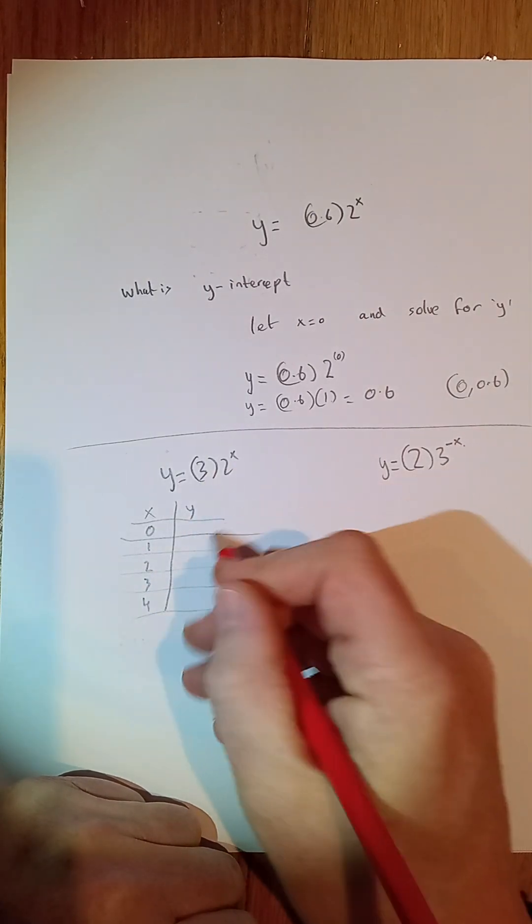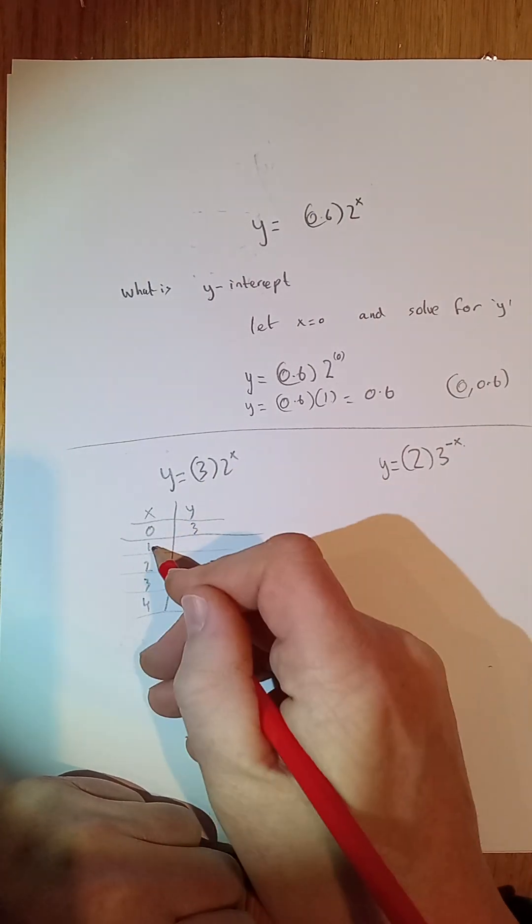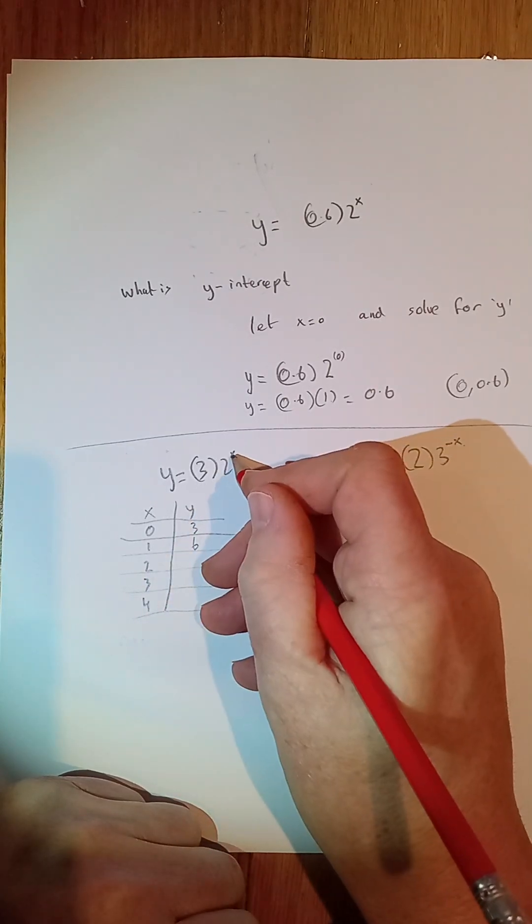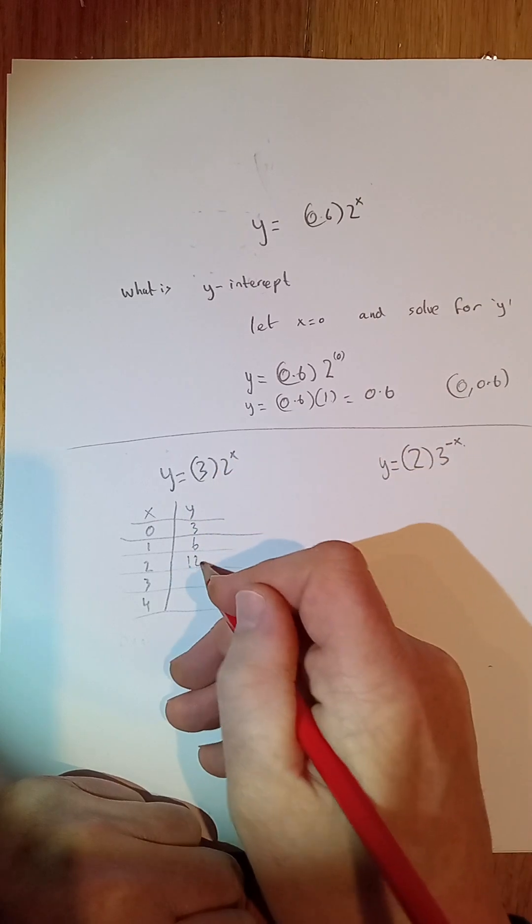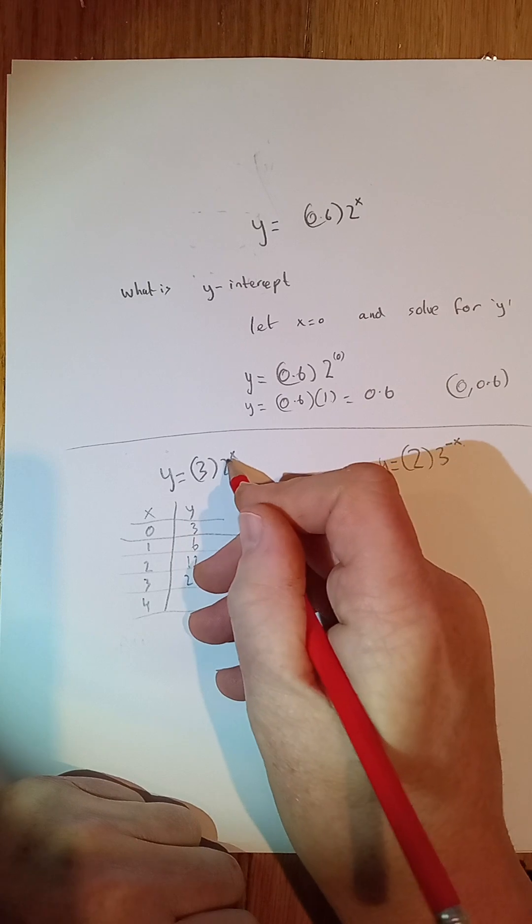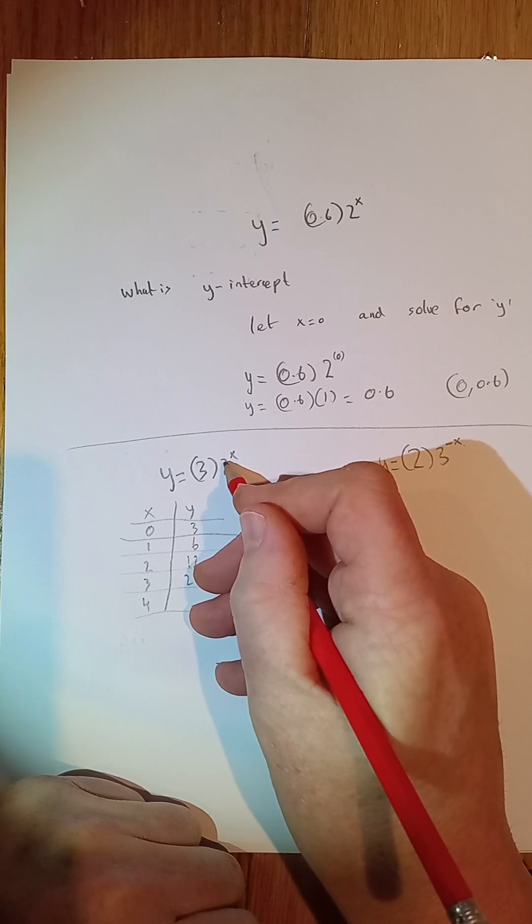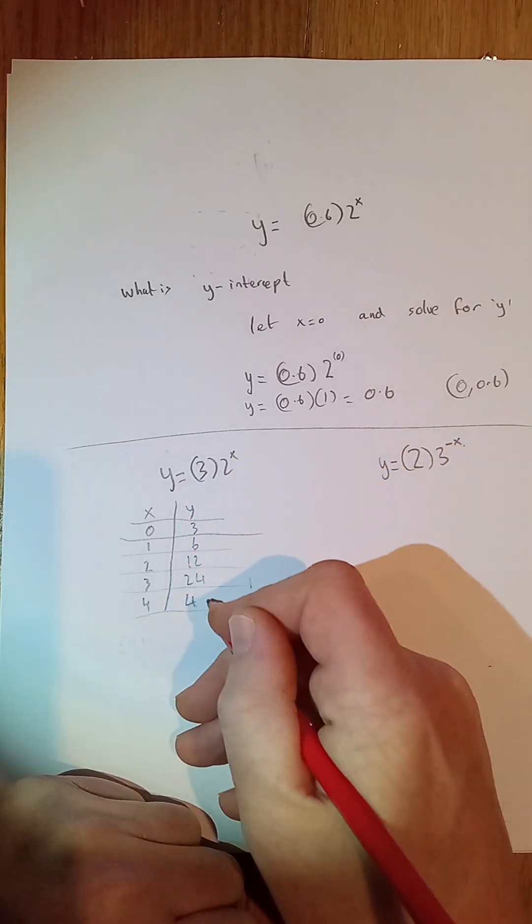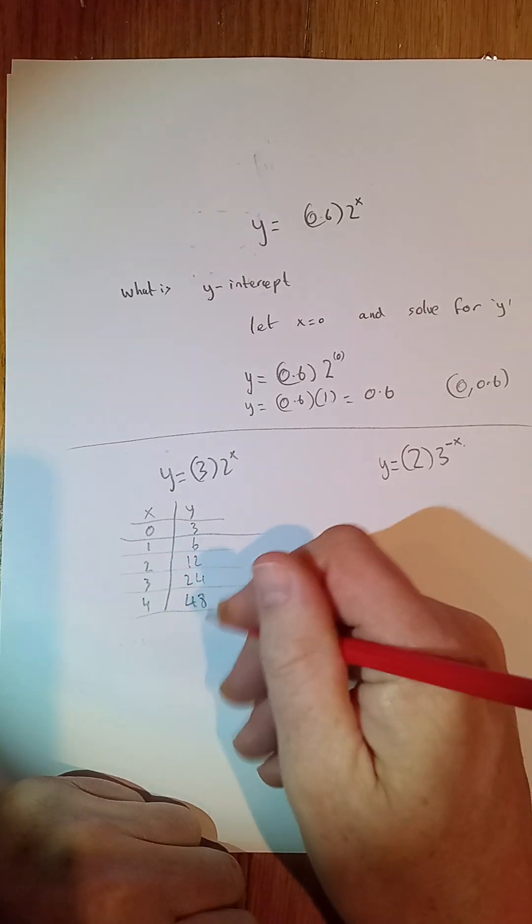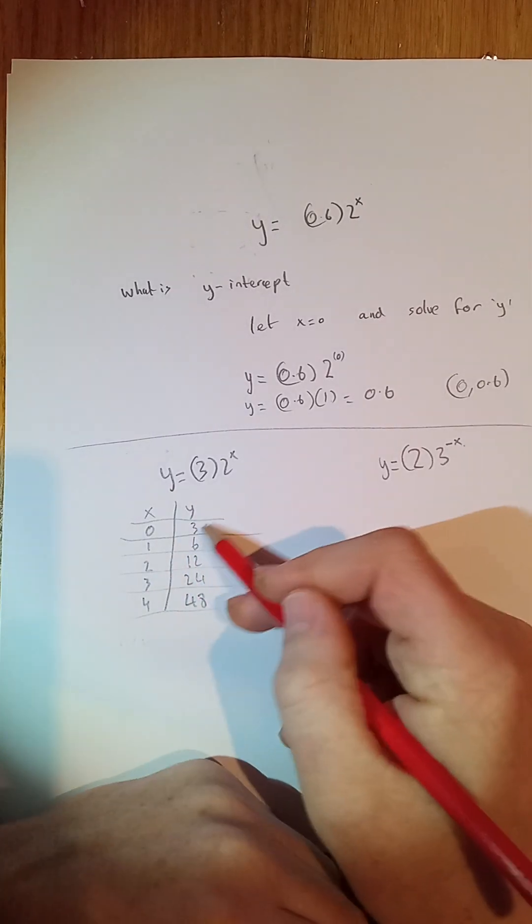We're going to start at x equals 0, and then do x equals 1, 2, 3, and 4. When x is 0, y is 3. When x is 1, y is 6. When x is 2, that's 2 squared is 4, y is 12. When x is 3, that's 24. When x is 4, so that's 16, that's 48. 3, 6, 12. It's doubling up each time. You can see that. But your initial state was 3.